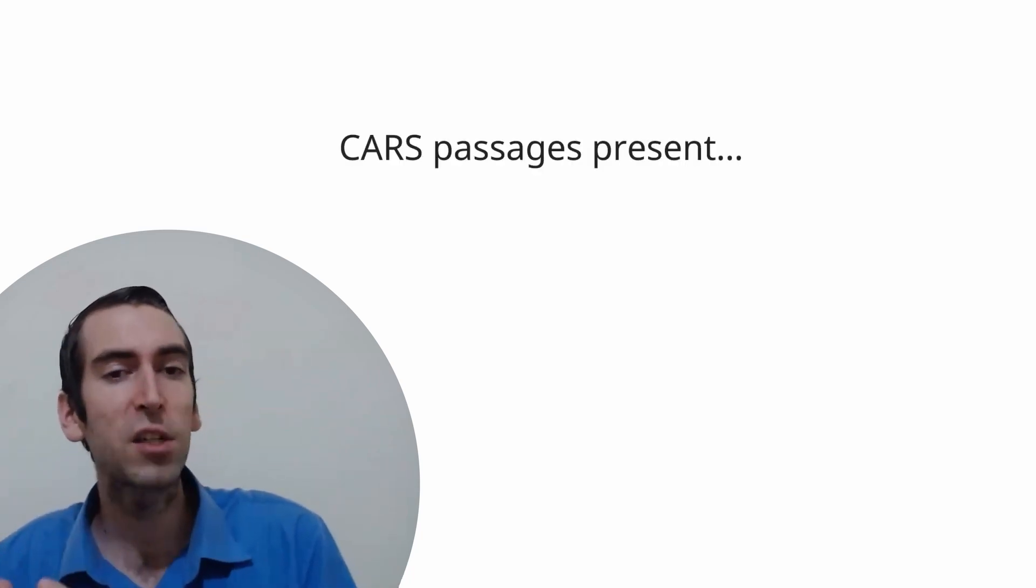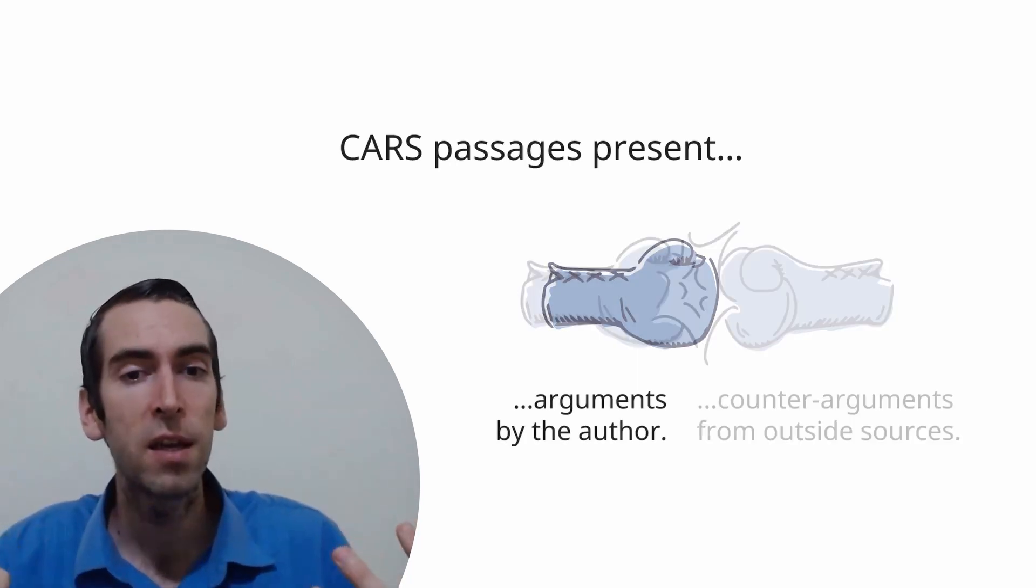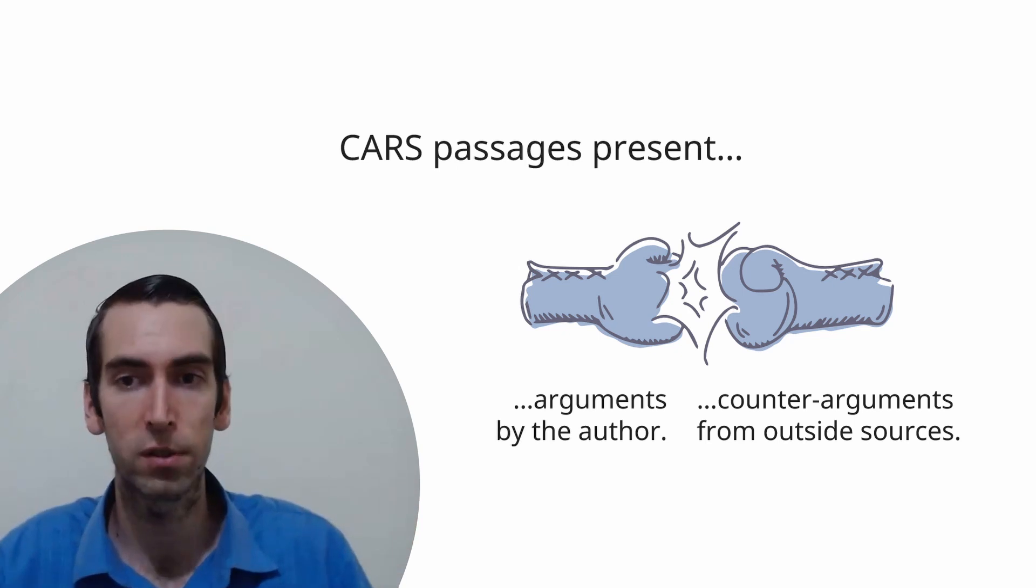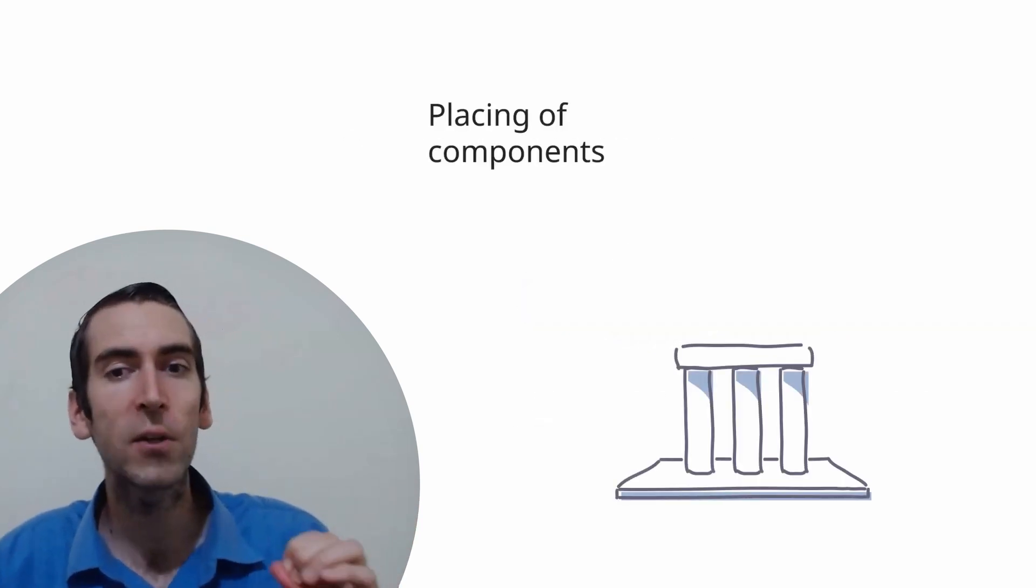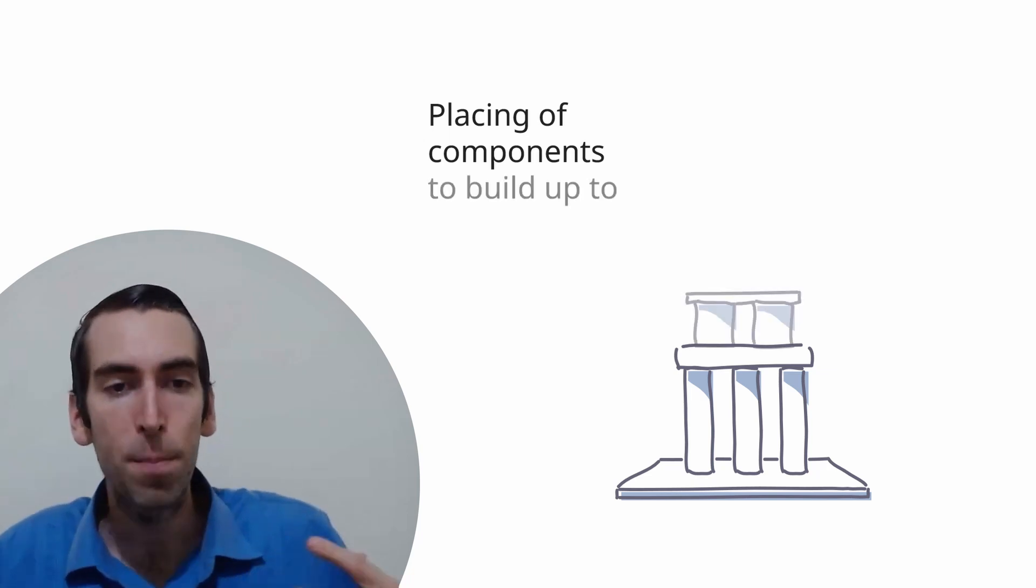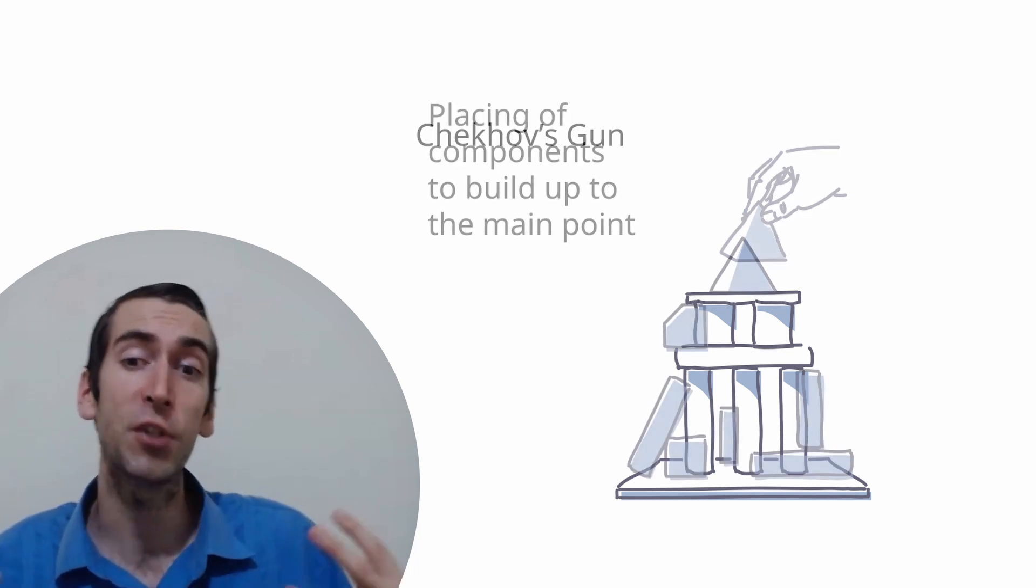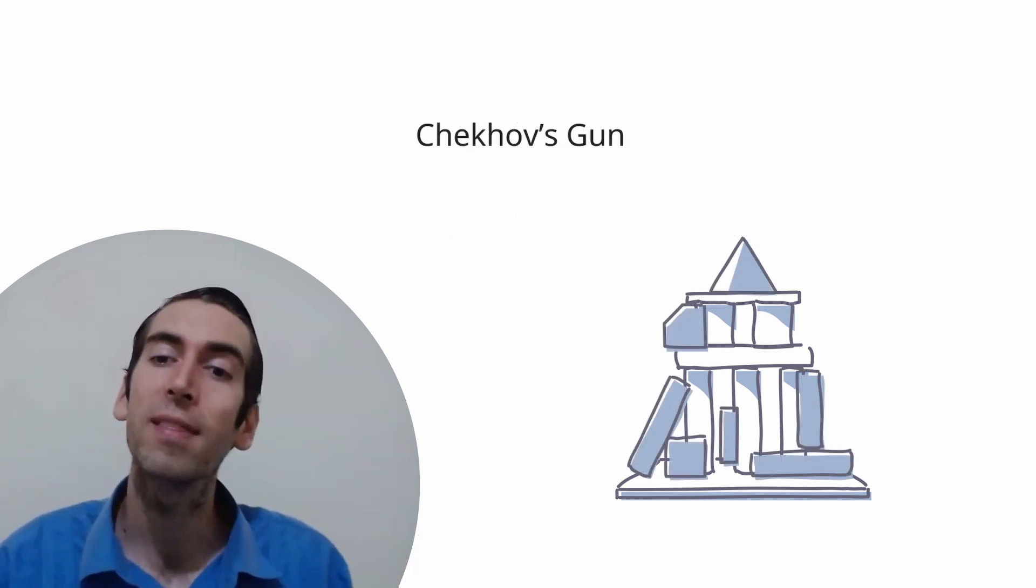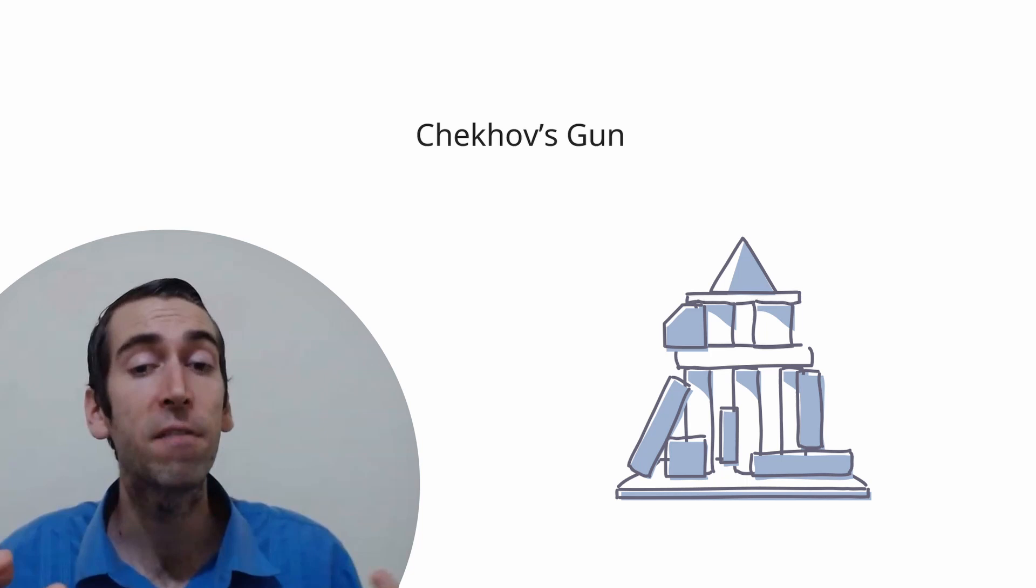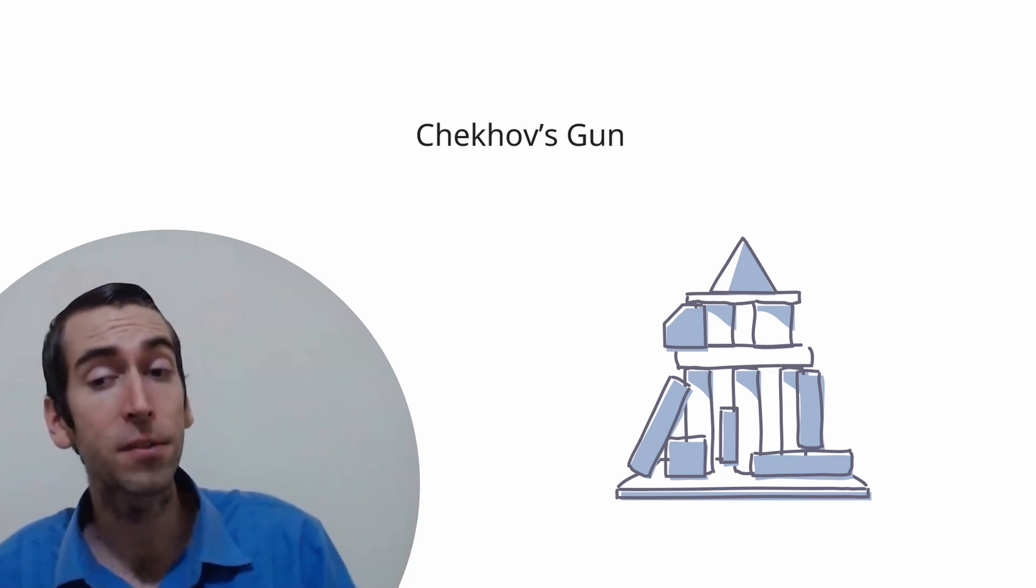Regardless of whether this is a humanities passage or a social sciences passage, a CARS passage will be structured to have viewpoints of the author presented, as well as counter-arguments from outside sources. A good author is going to place every single of these constituent components to build up to the main point. In literature, this is known as Chekhov's gun, or that every element in the narrative be necessary and irreplaceable, and that everything else be removed.